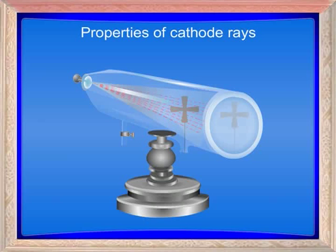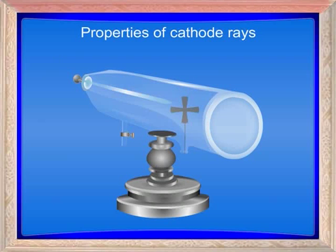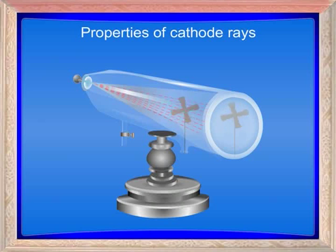Properties of cathode rays: One, the rays travel in a straight line and cast shadows; the rays leave normal to the surface of the cathode. Two, the cathode rays have sufficient kinetic energy — a mica vane paddle wheel placed in the path of the rays will rotate.